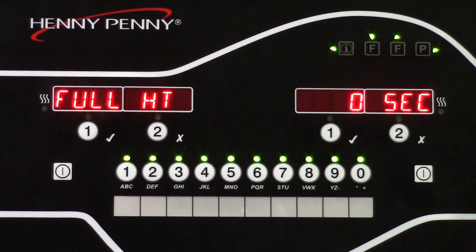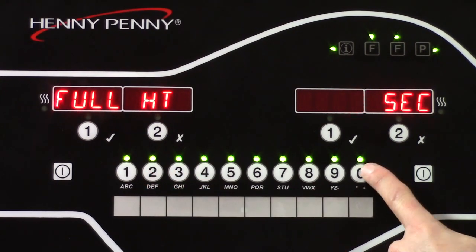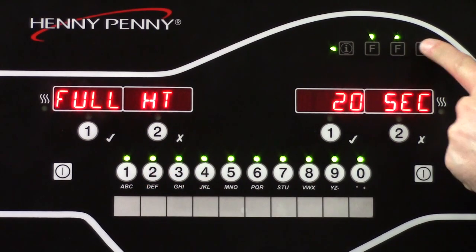Full heat is like cook anticipation. 20 seconds is standard for this setting. This means that when a timer's started, the fryer will call for heat for the first 20 seconds in anticipation of cold or frozen product being dropped into the oil. 20 seconds is normally set by default.